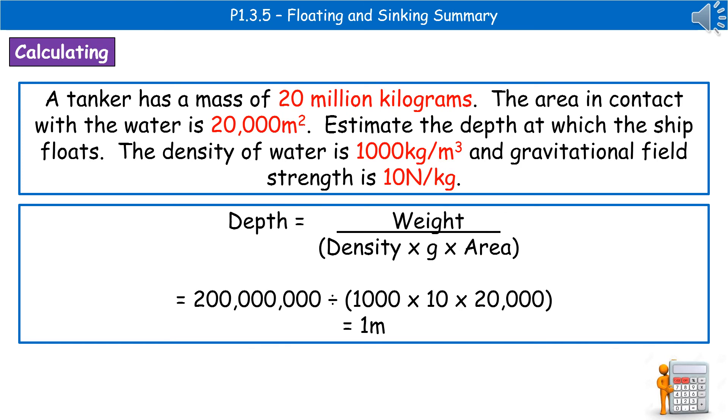Next thing we need to do is a bit of rearranging, because remember, we need to work out the depth from our question. To rearrange that equation gives us depth is the weight divided by density times G times the area.